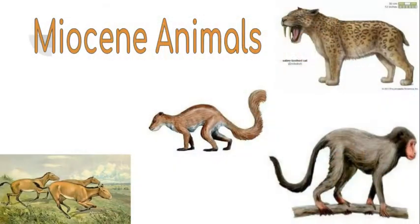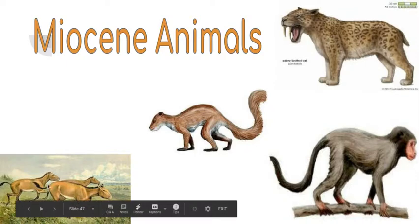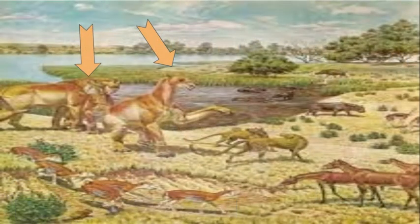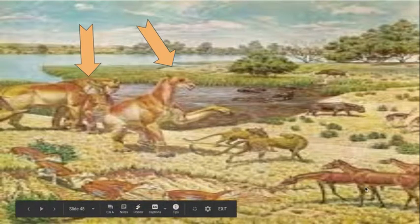Here are some Miocene animals, including the first saber-toothed cats, the first primates, and more of those weird horses. The first primates formed during the Miocene, and you can see some of those animals acting as kind of apex predators, with smaller life forming as well.